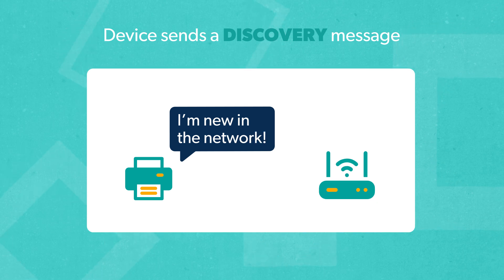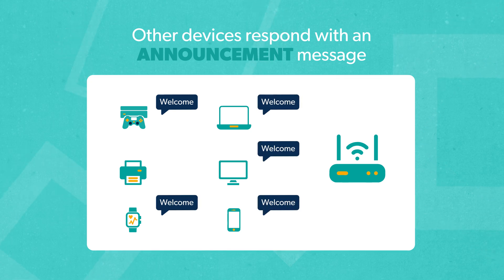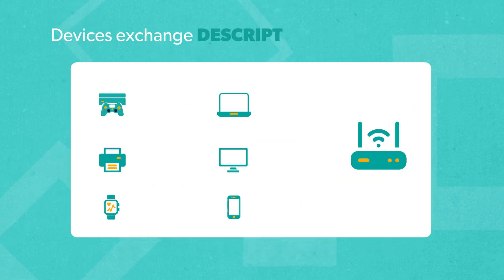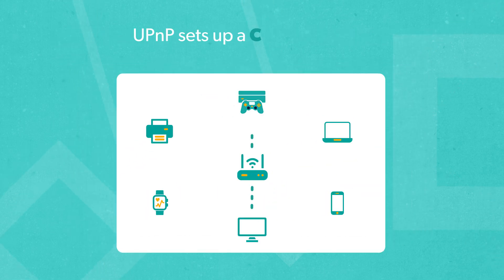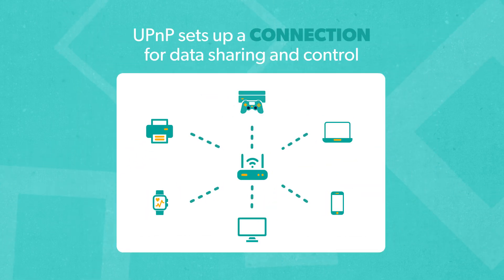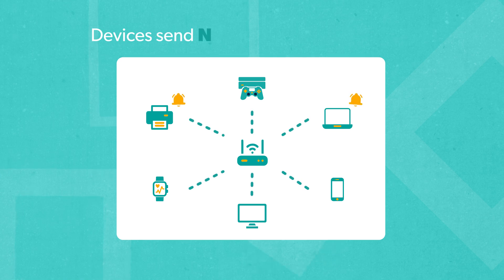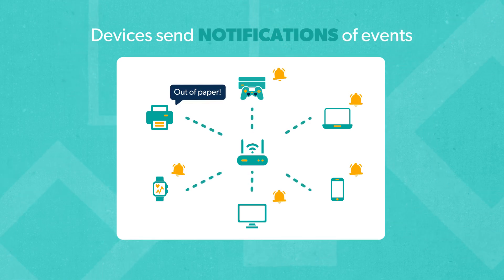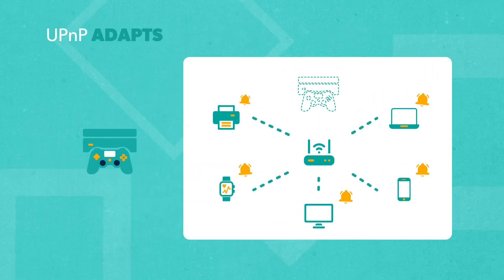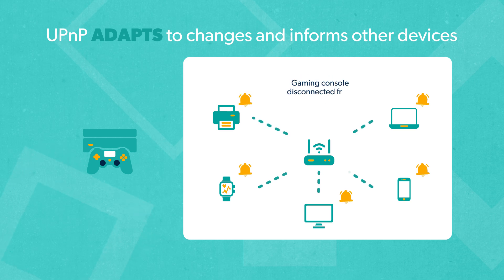When a device first joins a network, it sends out a discovery message to find other UPnP-enabled devices. Other devices receive the discovery message and respond with their own announcement message. Once the devices are talking, they give each other a description of their features and capabilities, then UPnP automatically sets up the connection so they can share data and control each other — for example, streaming a slideshow from your smartphone to your TV. Connected devices also send UPnP notifications to inform each other of events, like when your printer tells your computer it's out of paper. If there are any changes on the network, UPnP adapts and automatically informs all other devices.